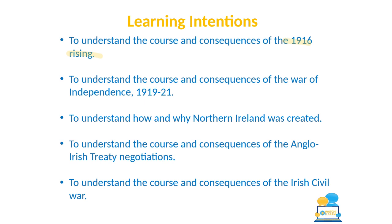To recap, today we covered: the course and consequences of the 1916 Rising, the War of Independence, how and why Northern Ireland was created, the Anglo-Irish Treaty negotiations, and the Irish Civil War. For exam preparation, I strongly recommend practising writing sample answers for each of these events. Use the format discussed: two developed points on causes, two or three on the course, and two on consequences. There's a very strong chance one of these will come up as an 18-mark question on your Junior Cycle History exam.